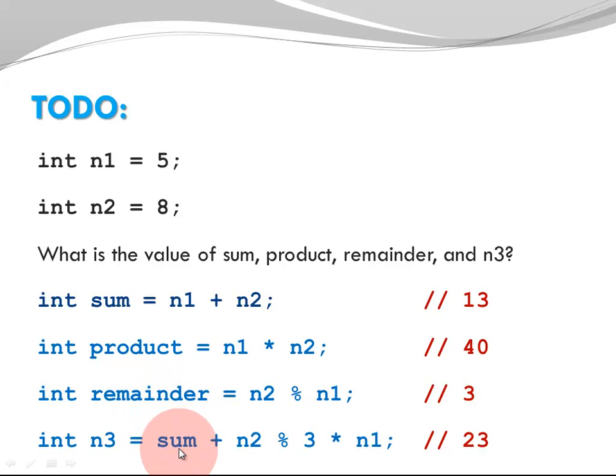The last one is a little bit more complicated. I have a number of operators, sum plus n2 modulus 3 times n1. Let's break this one down. We're doing the operators with the highest precedence first, which is modulus and multiplication. We are executing them left to right. n2 modulus 3 is 8 modulus 3. 8 divided by 3 is 2, remainder 2. So my result here is 2.